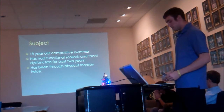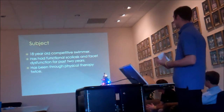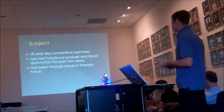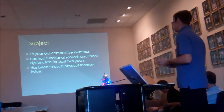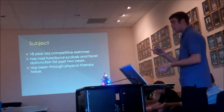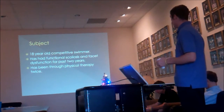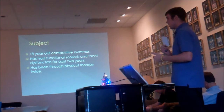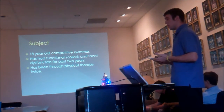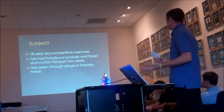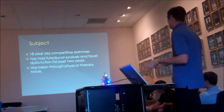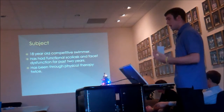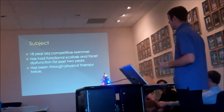My subject was an 18-year-old competitive swimmer. On the initial evaluation day, she pretty much laid it out — she'd done her initial eval and said she had scoliosis and SI dysfunction. We already knew what was wrong with her, and she mentioned she'd been through physical therapy twice and nothing had really helped her.